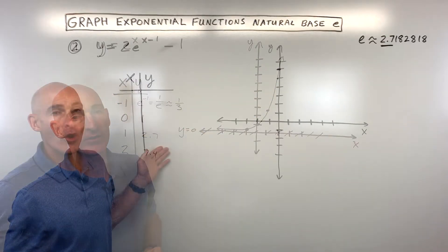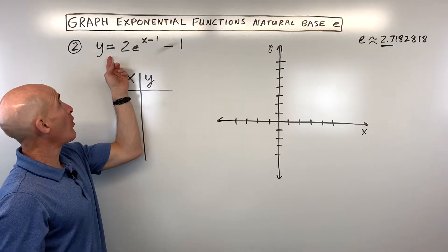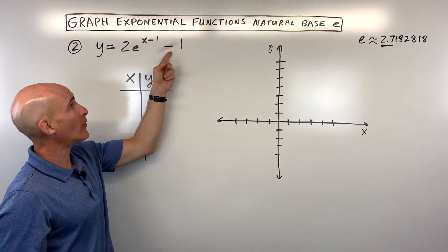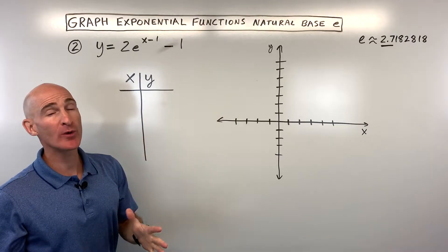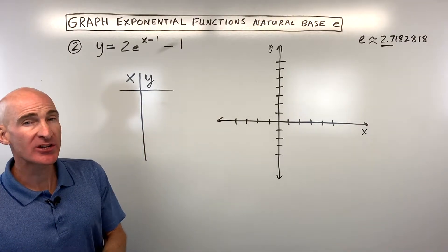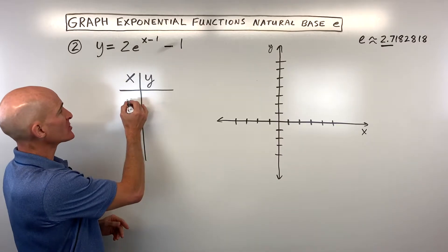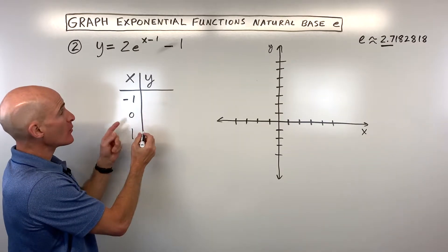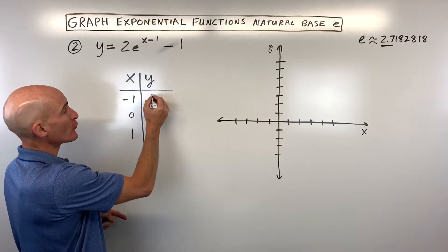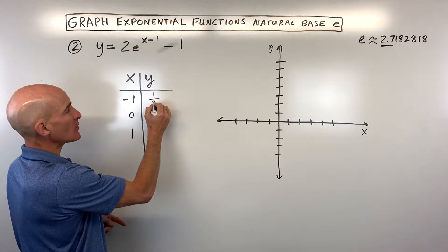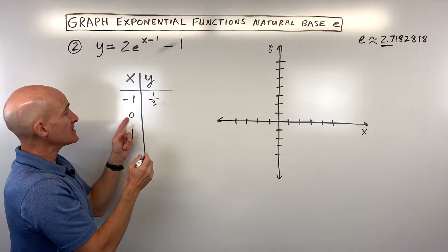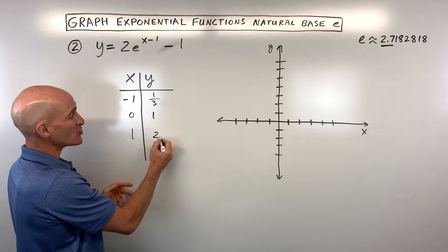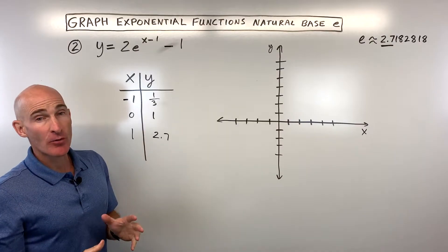Let's take a look at another example. For example number two, we have y equals 2 times e to the x minus 1 power minus 1. Well, let's start off with our parent function again, taking easy small numbers like negative 1, 0, and 1. Remember, negative 1 was approximately one third, 0 gives e to the 0 which is 1, and e to the first is about 2.7.